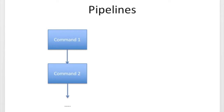There's a better way of submitting such a pipeline, and that's called using job dependencies. With job dependencies, you put each of these commands into a separate job and submit them such that the second job runs only after the first job completes.